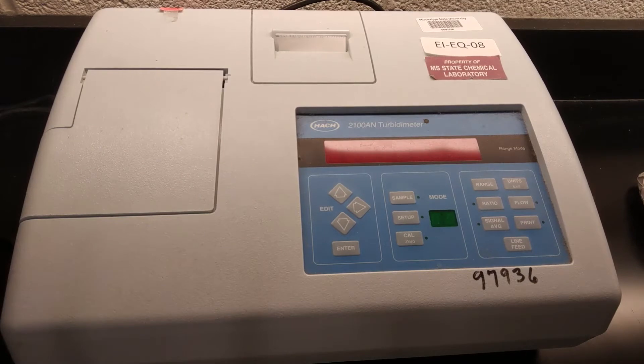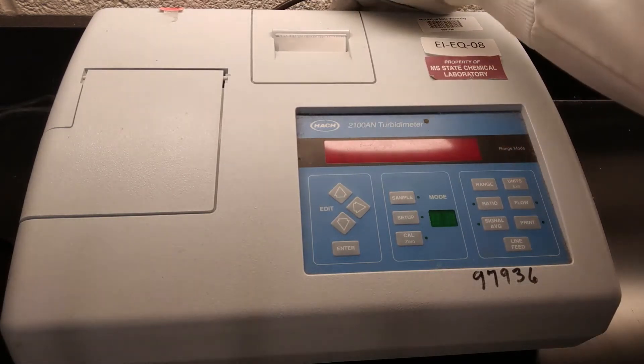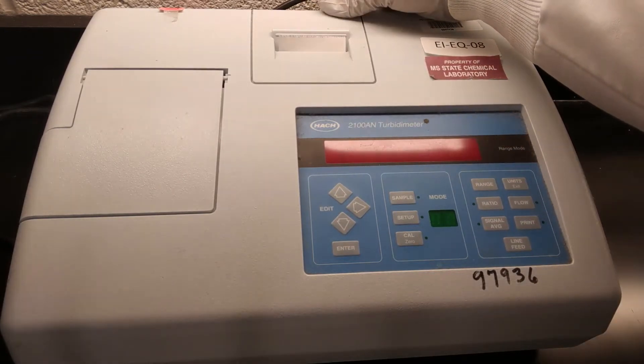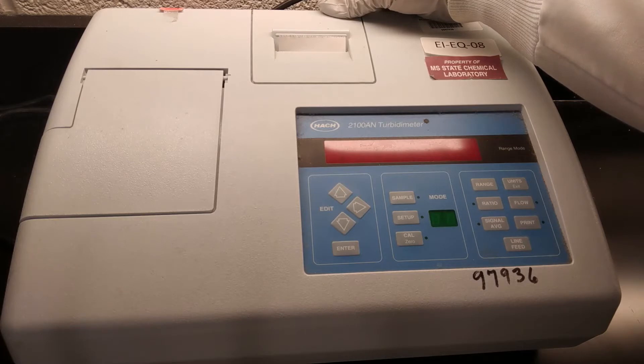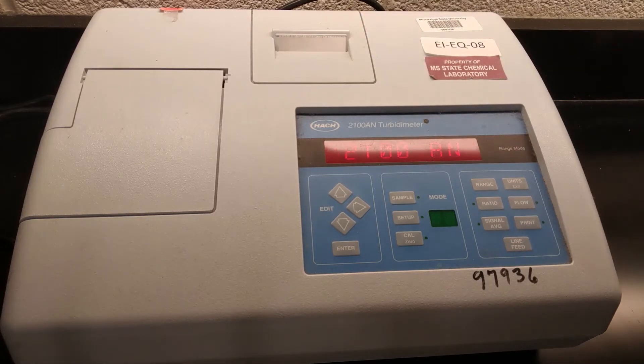To start up our turbidometer, there's just a switch on the back, just a little bit behind where the paper comes out of the printer. We can flip that on and you can hear it doing some mechanical things. I think that's the printer starting up and you can see the logo showing up, the 2100 AN. It takes about a minute for this instrument to start up.